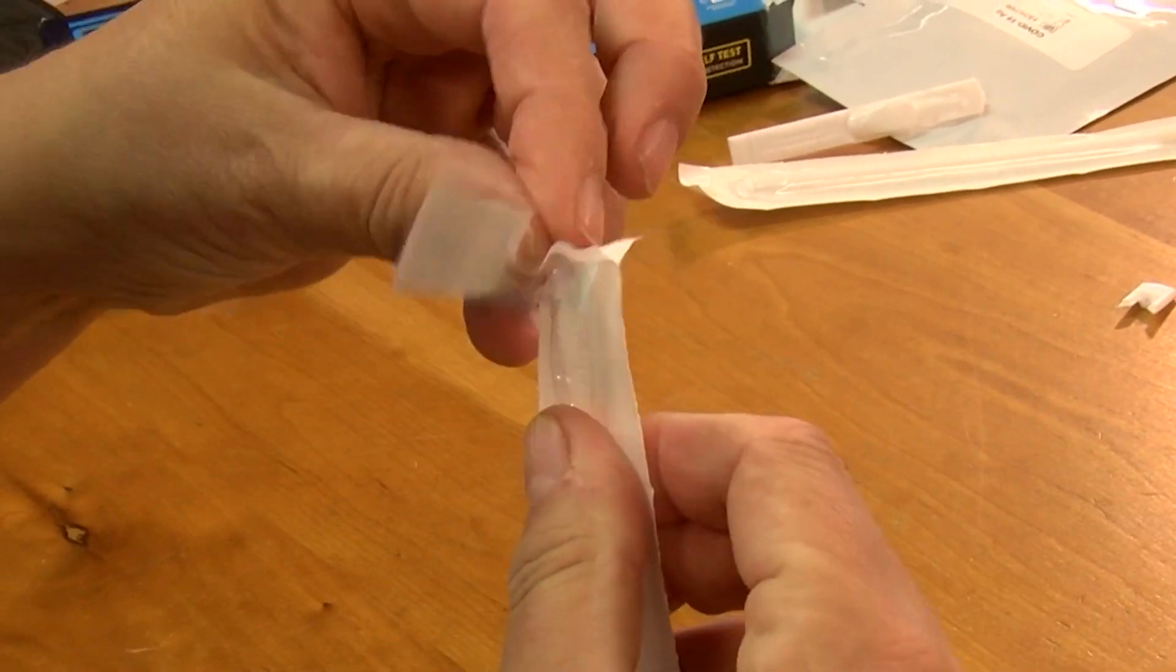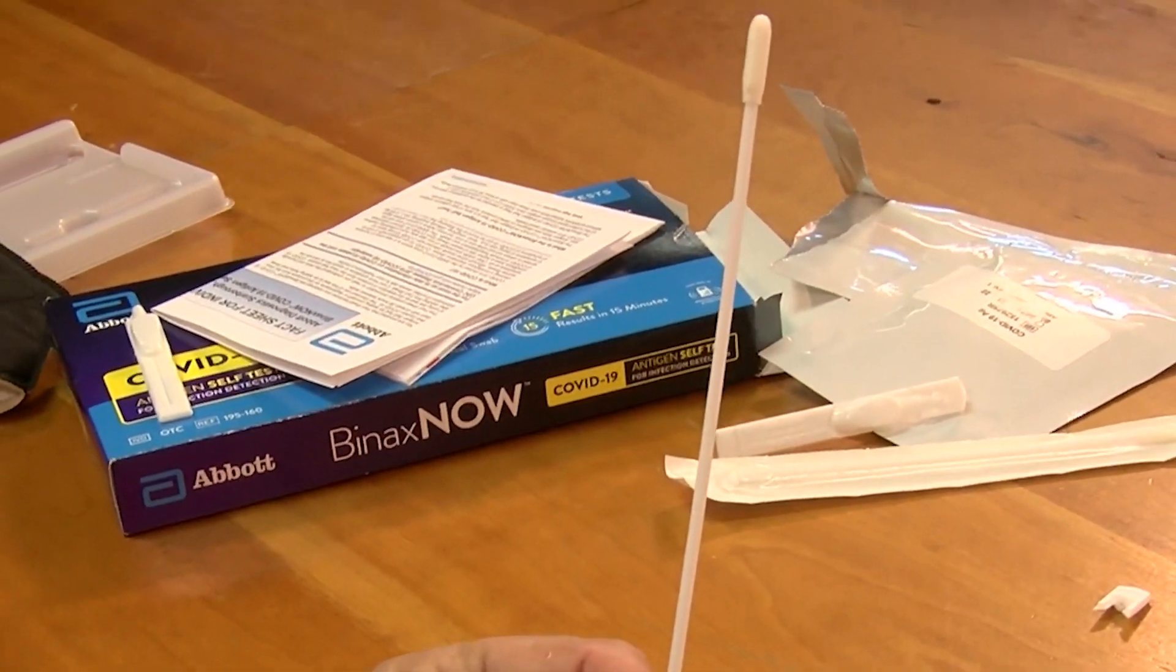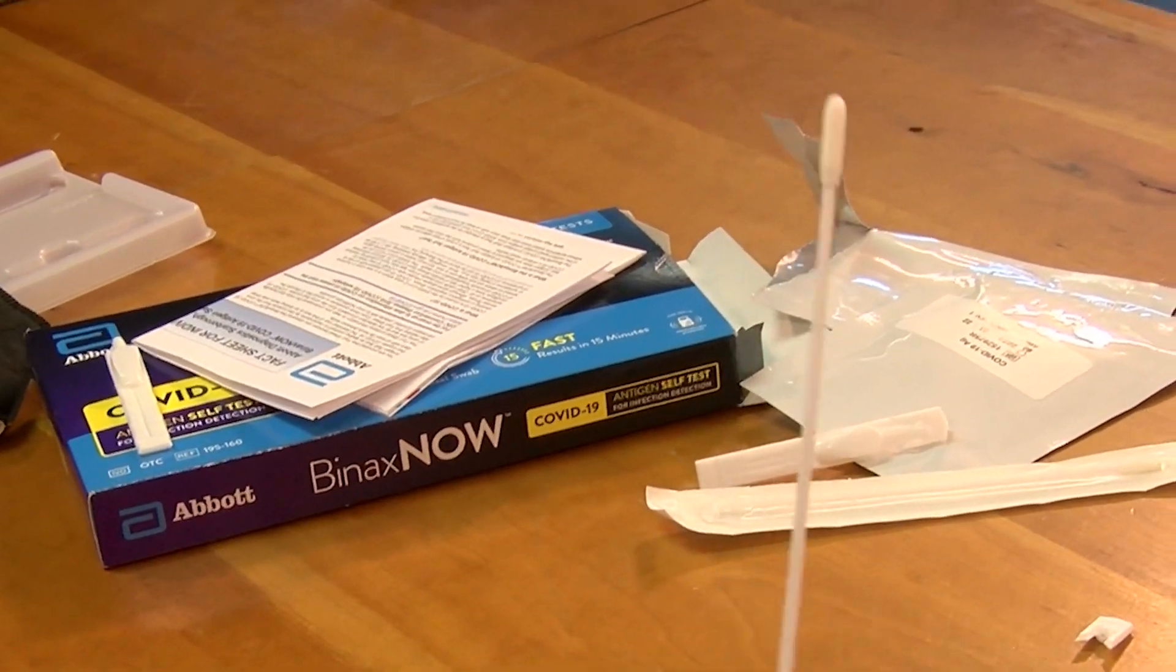Open the swab package at the stick end and take the swab out. Insert the entire soft tip of the swab into a nostril. Rub the swab against the inside walls of your nostril, making five big circles. Do this for 15 seconds.